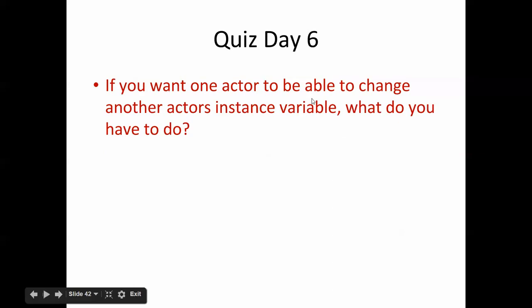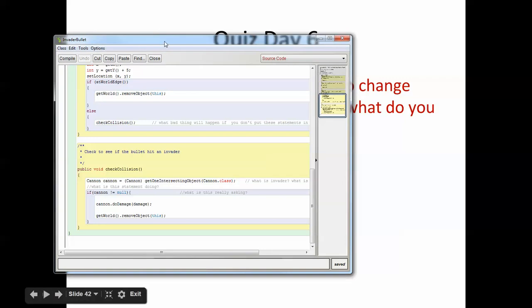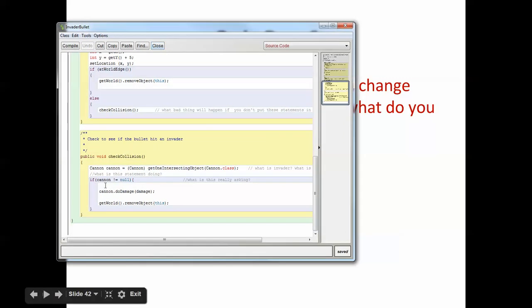Okay, so if you want one actor to be able to change another actor's instance variable, what do you have to do? And the answer is you have to do it like this. Let's see if we can find it here. You have to do it through a request. Number one, get the cannon. Cannon equals get one intersecting. So you have to get the cannon into a box, right? So we have him in a box called lowercase cannon because the bullet touched him.